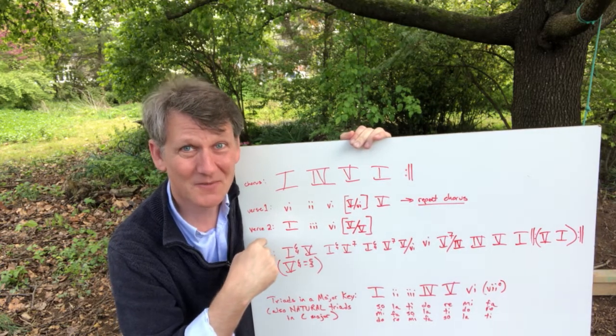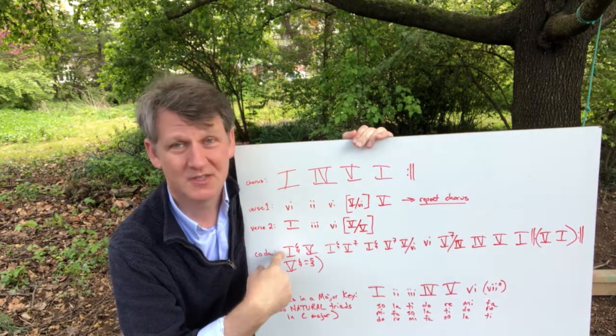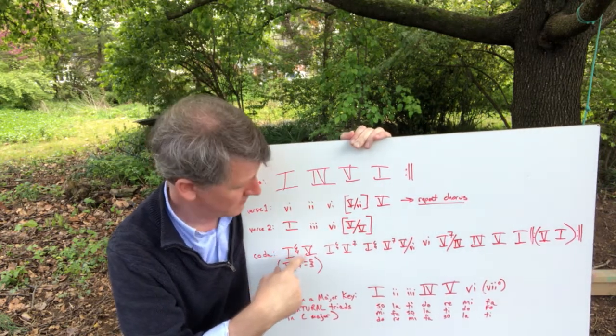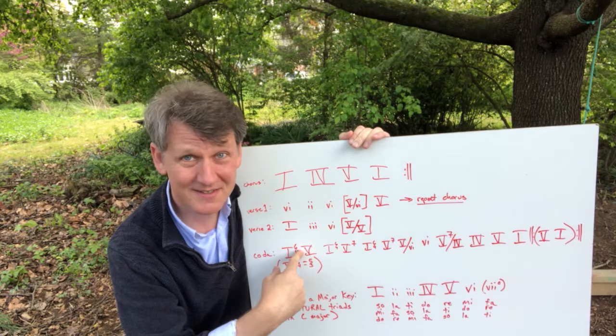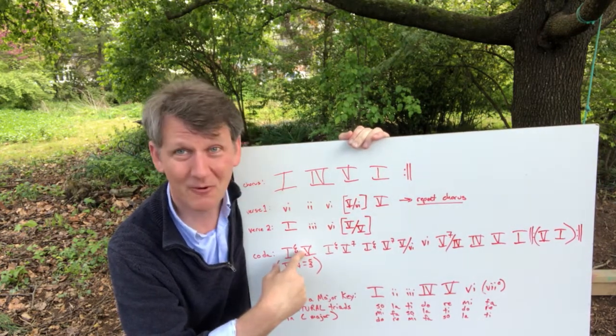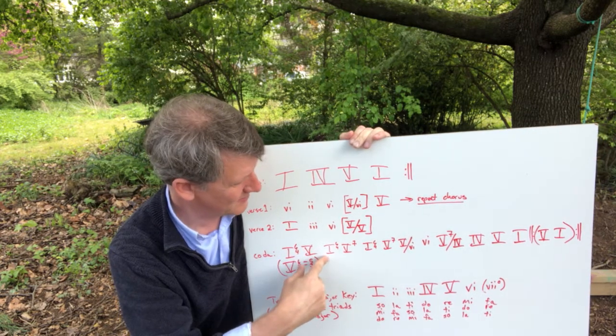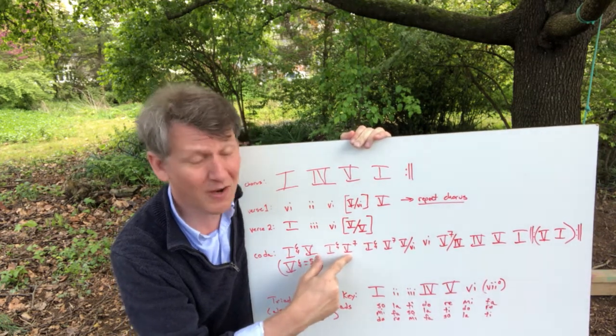It has DO MI and SO in the chord. So when you sing SO DO SO SO RE TI, we're going from the cadential 6-4 to a V chord, and that's the way it generally wants to resolve.